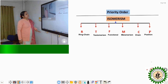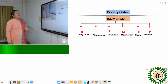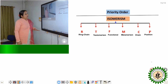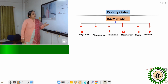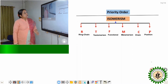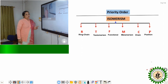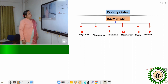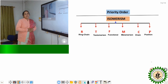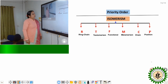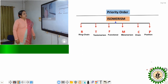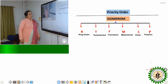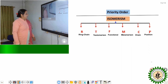Now, when a compound shows two types of isomerism, we determine which one it is by following a priority order. The priority order for isomers is: first, ring-chain isomer; then tautomer; then functional group isomer; then metamer; then chain isomer; and finally positional isomer.